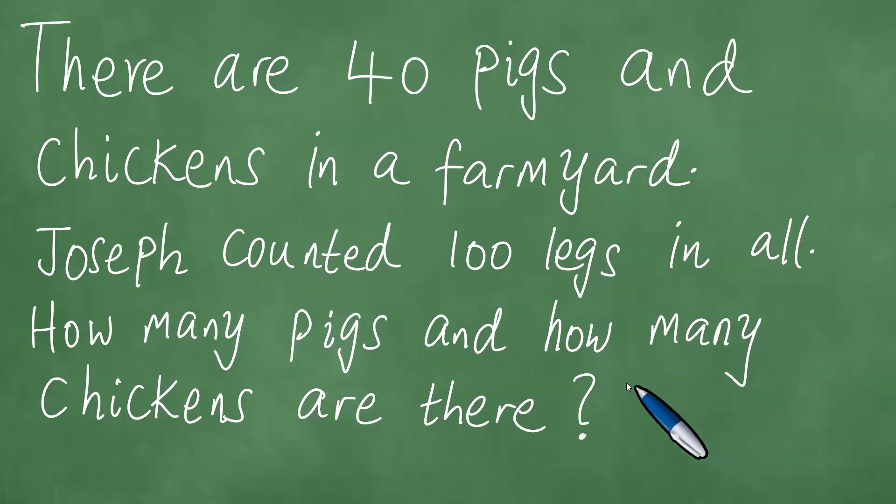In this lesson, we shall proceed to solve this word problem. There are 40 pigs and chickens in a farmyard. Joseph counted 100 legs in all. How many pigs and how many chickens are there?